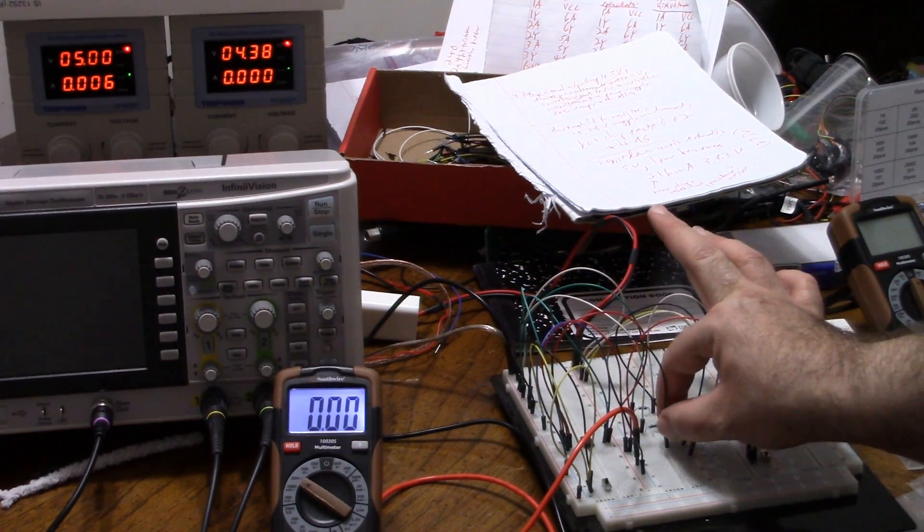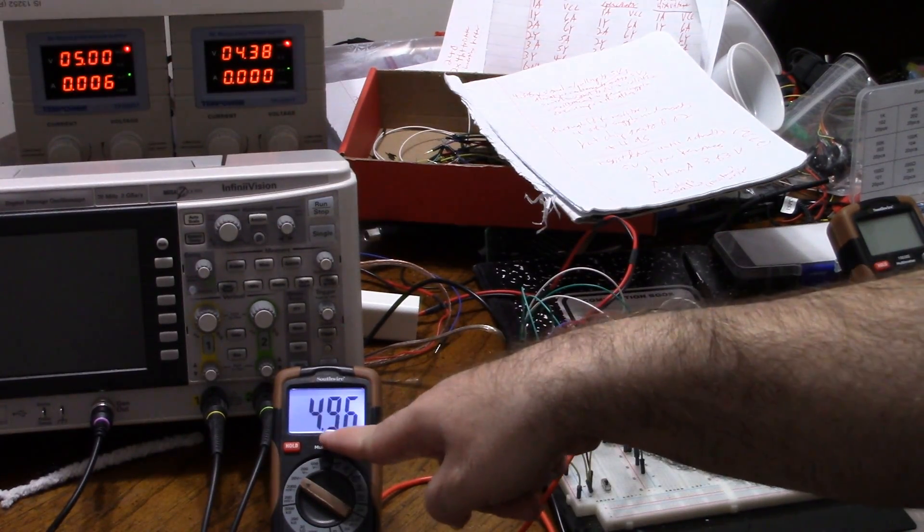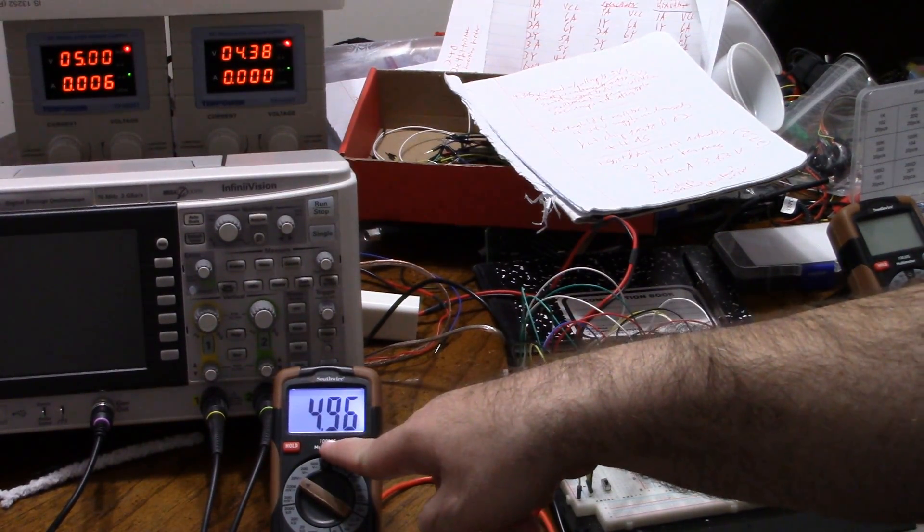Which is what we would have expected. What about the 3 ohm resistor? Hey, look at that. The 3 ohm resistor is giving us 4.96 high.